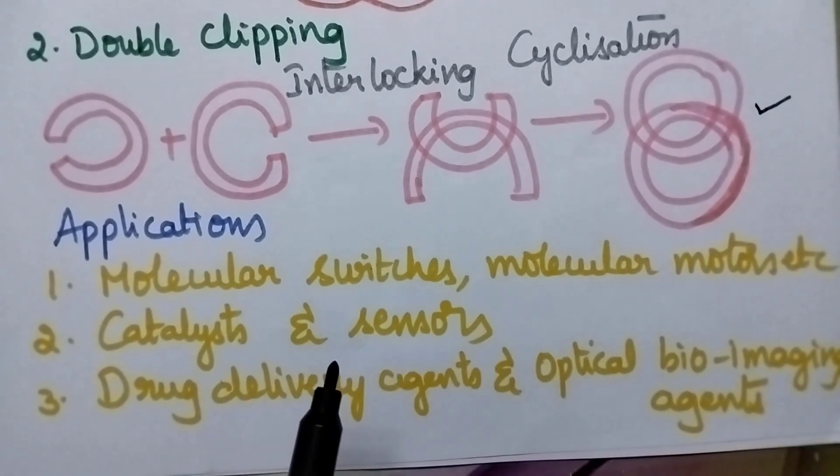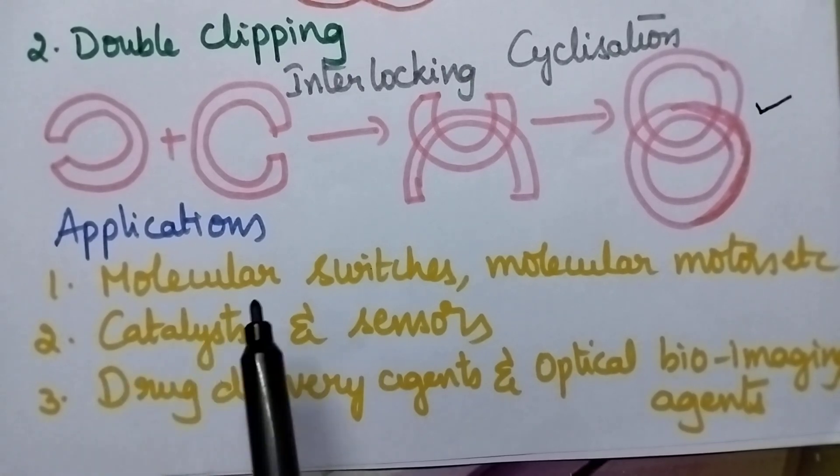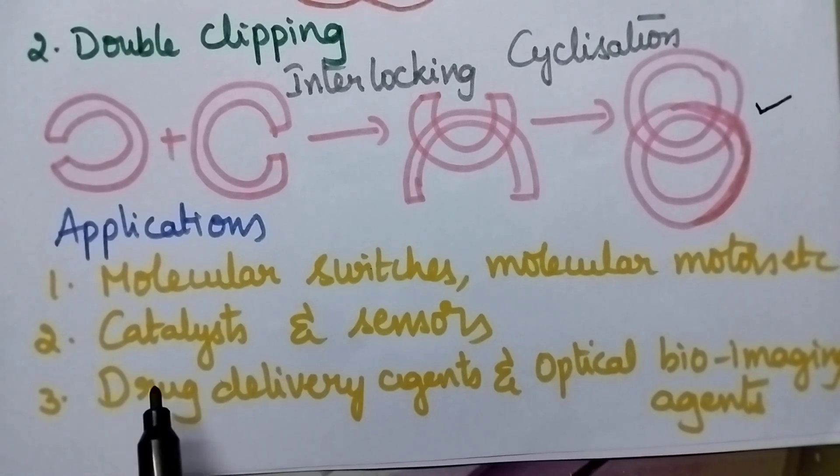Finally moving to the applications of catenanes. Catenanes are highly useful for the designing of molecular switches, molecular motors, etc. These catenanes can be used as catalysts, even they can be used as sensors. They are highly useful as drug delivery agents and also optical bioimaging agents.